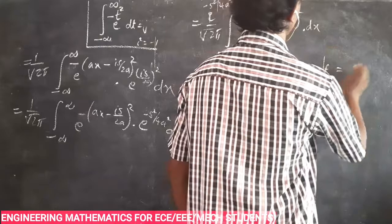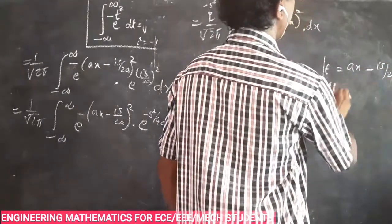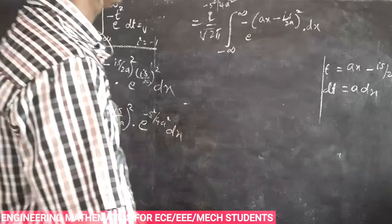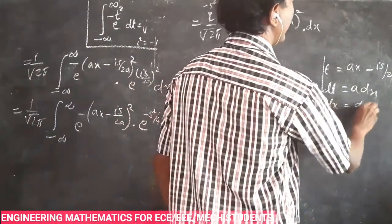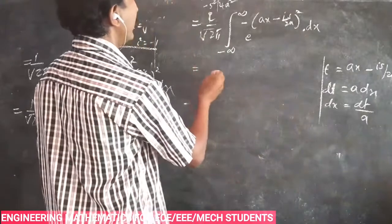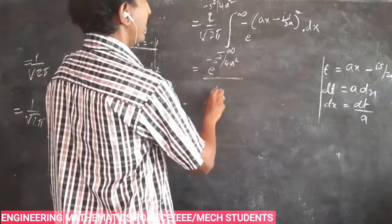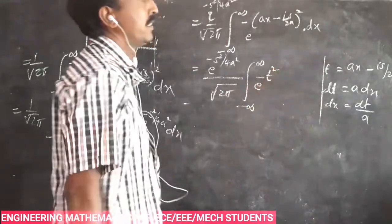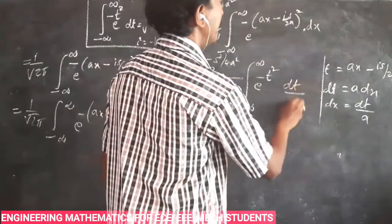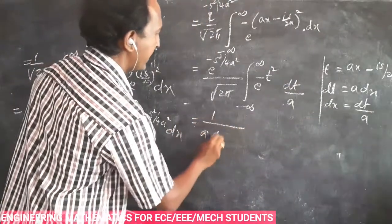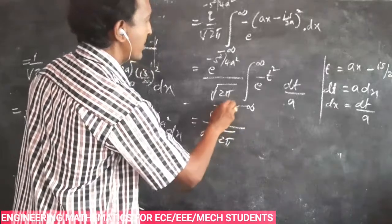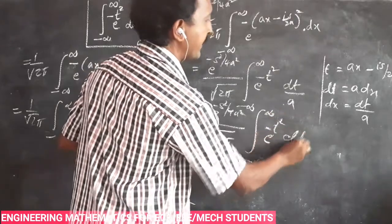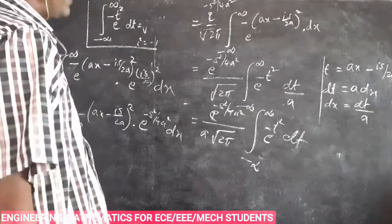We substitute t equals a x minus i s by 2 a, so dt equals a dx, since i s by 2 a is a constant its derivative is zero. Therefore dx equals dt by a. That gives e power minus s squared by 4 a squared by root of 2 pi, integral from minus infinity to plus infinity of e power minus t squared times dt by a. Taking 1 by a outside: 1 by a into root of 2 pi times e power minus s squared by 4 a squared times integral from minus infinity to plus infinity of e power minus t squared dt.